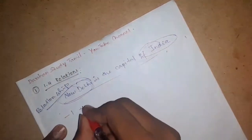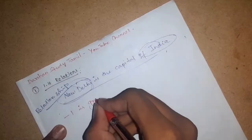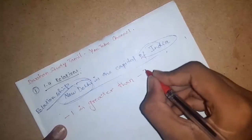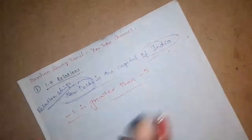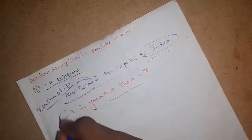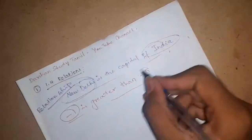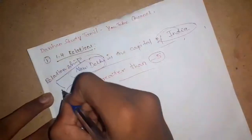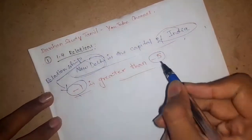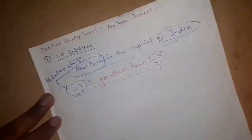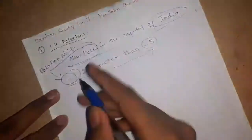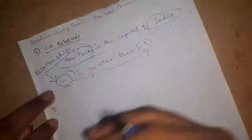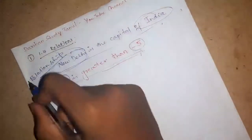Minus 1 is greater than minus 1 — that is a relationship. This one is expressing using symbols. This one is a relationship.